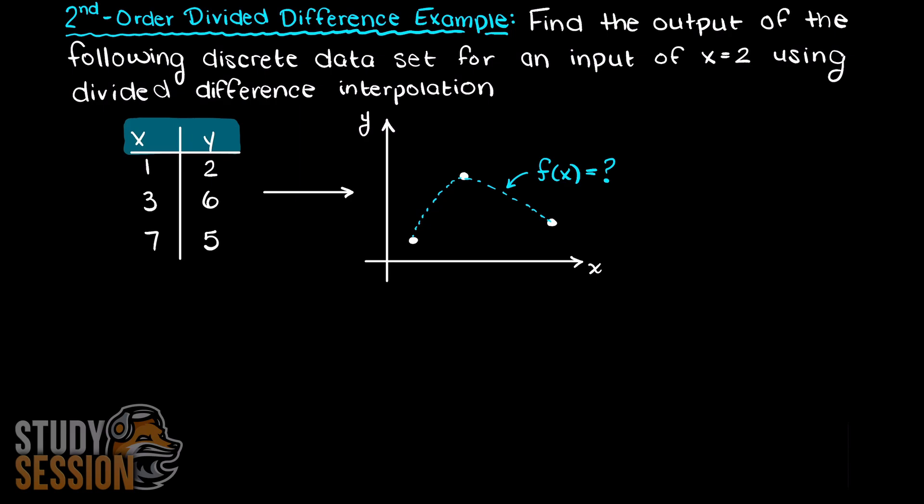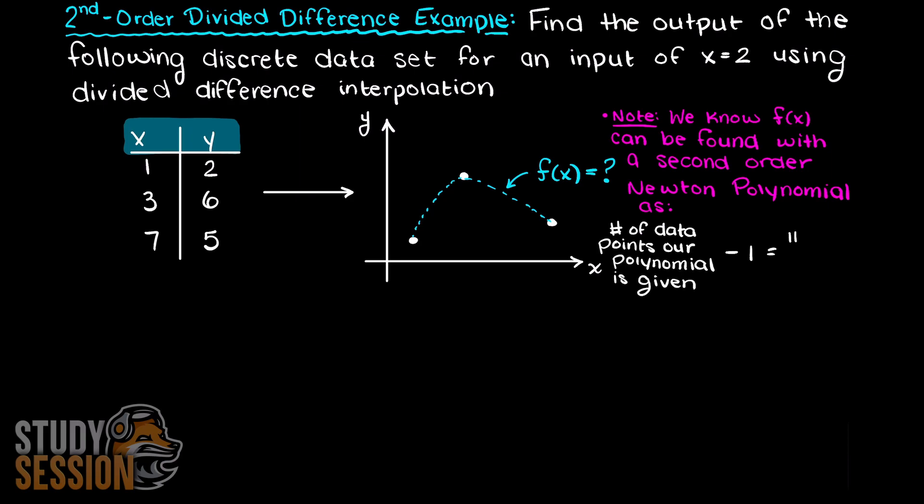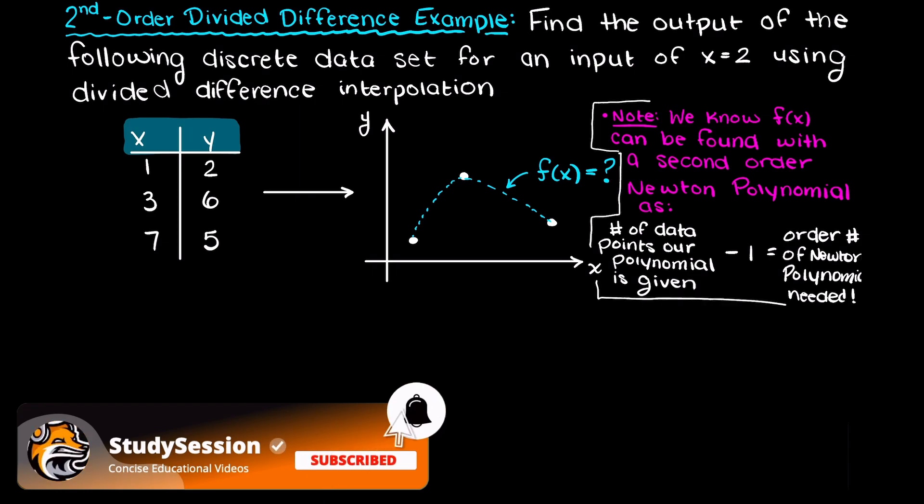Our first thing to do when solving this problem is determine what order Newton interpolating polynomial we will be solving. As we learned before, interpolating polynomials must always pass through every data point supplied to them. Therefore, our Newton polynomial will always be an order of n minus 1, where n is our number of data points.